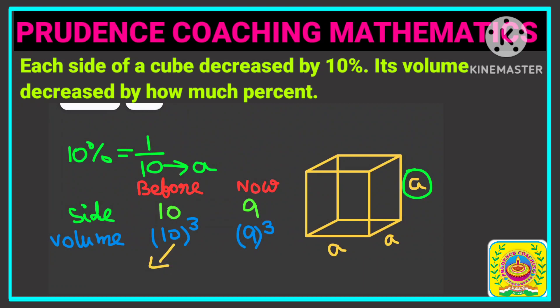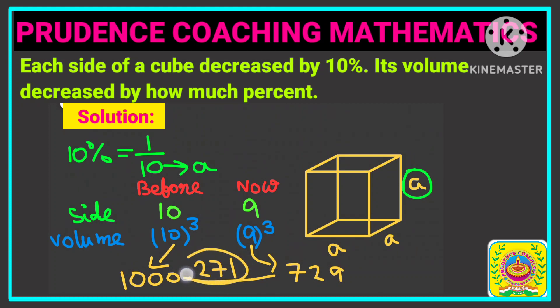So as you can see, the previous volume was 10 cube, that is 1000, and now the volume is 9 cube, that is 729. So the decrease in volume is 271, that is 1000 minus 729. You are asked to find out the percentage in decrease in volume. So as you can see, decrease is 271 out of what? Previously it was 1000.